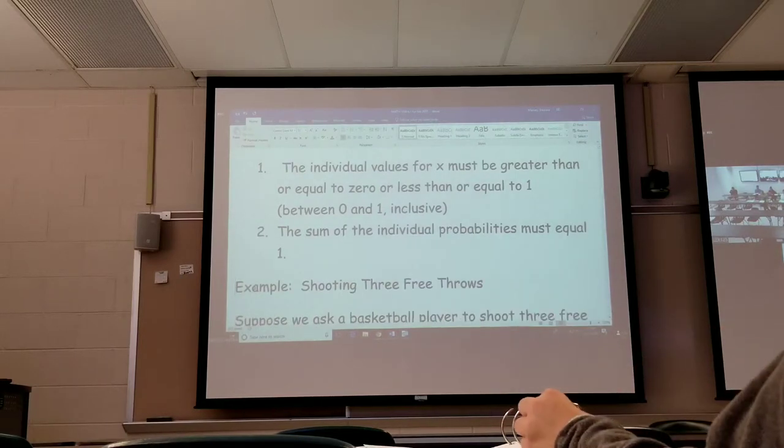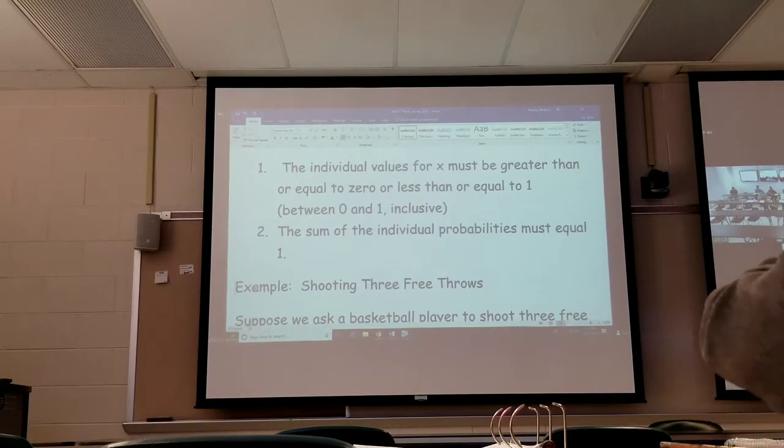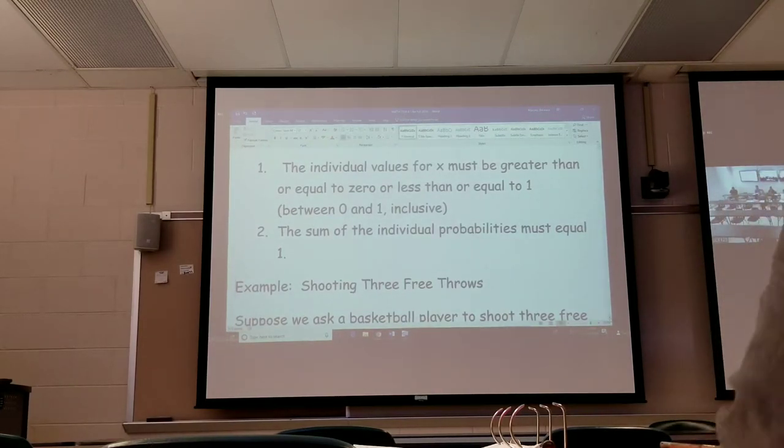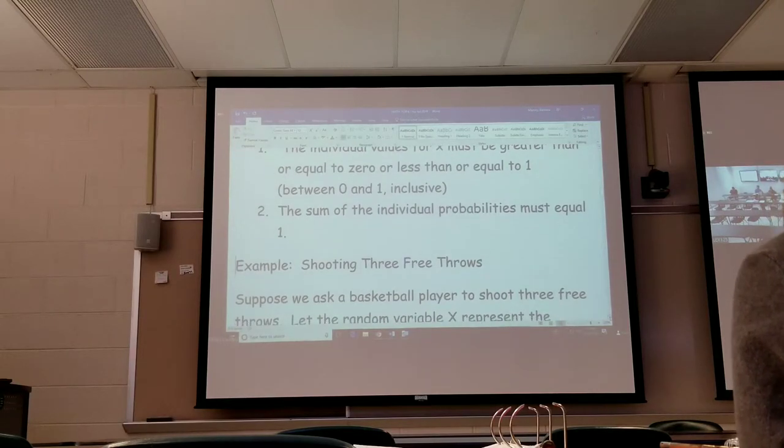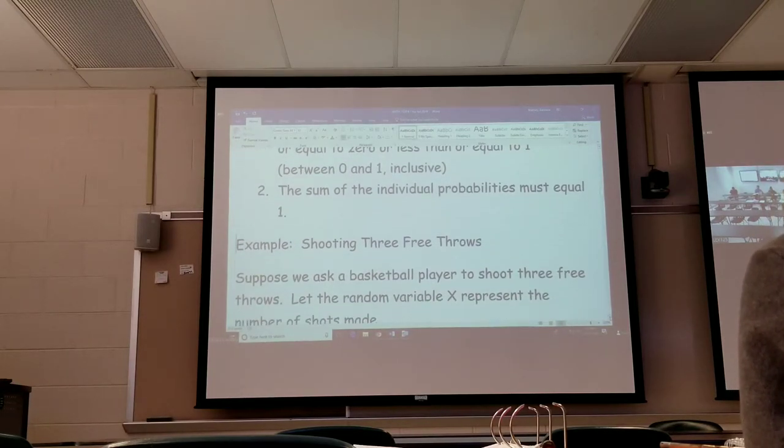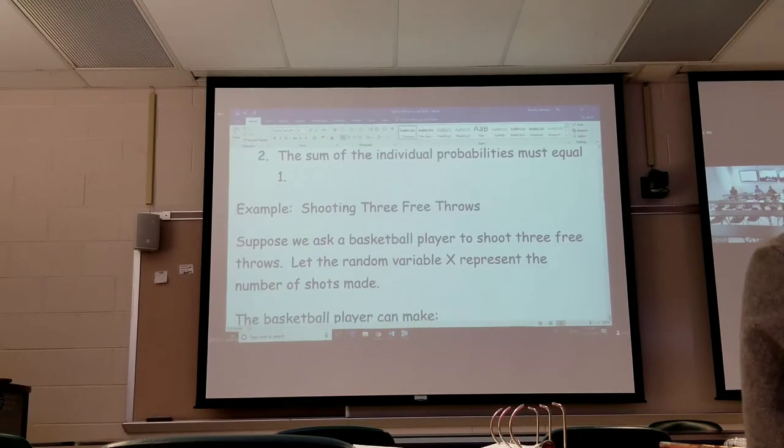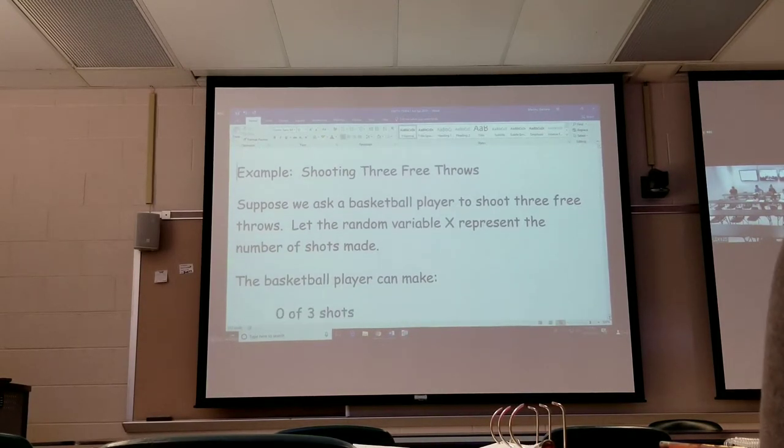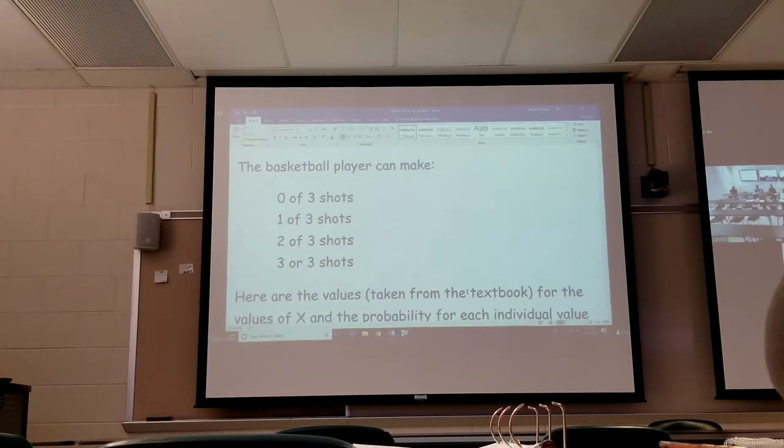This is from the book. There's a table in the margins of the textbook. So we're shooting three free throws. Suppose we ask a basketball player to shoot three free throws. We're going to let our random variable X represent the number of shots made. The basketball player can make zero free shots, one free shot, two free shots, or three free shots.